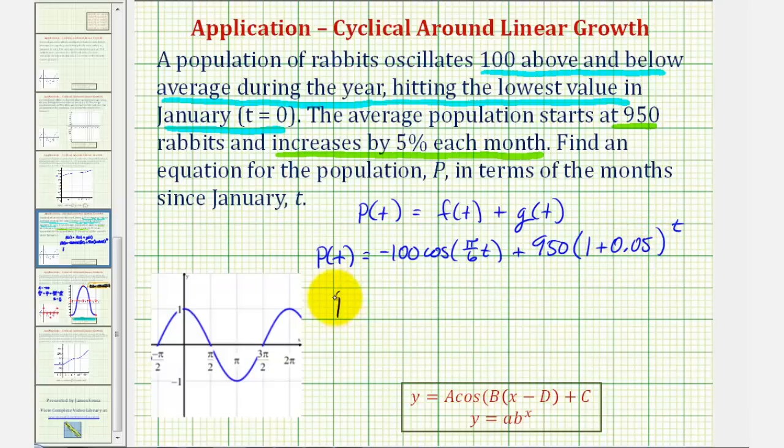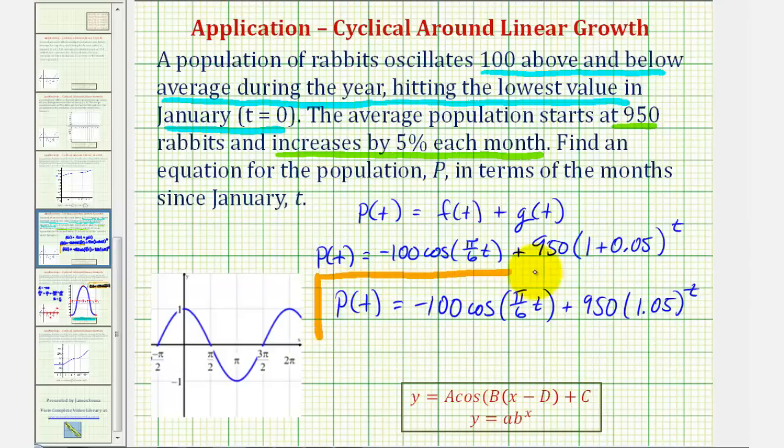So let's go ahead and simplify this. Notice, we would have p of t equals negative 100 times cosine of pi divided by six times t plus 950 times 1.05 raised to the power of t. This would be our population equation in terms of t, where t is the number of months since January.